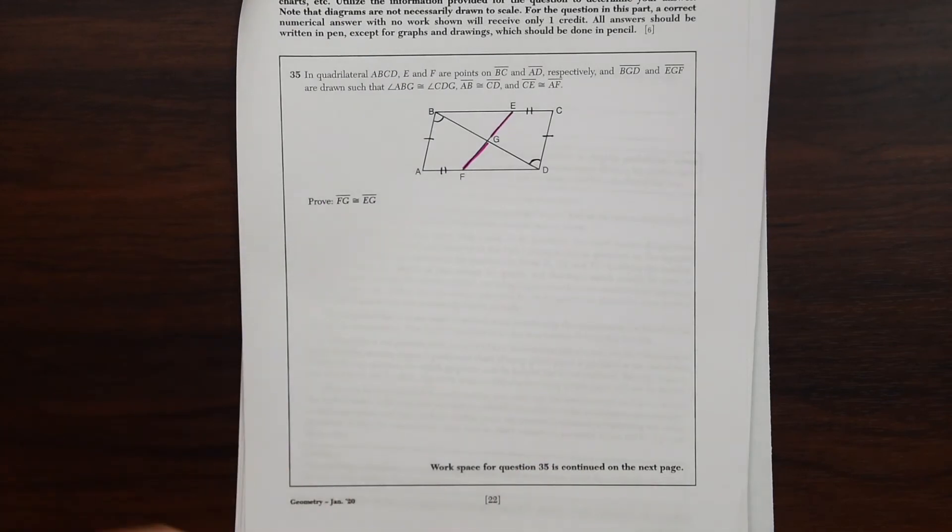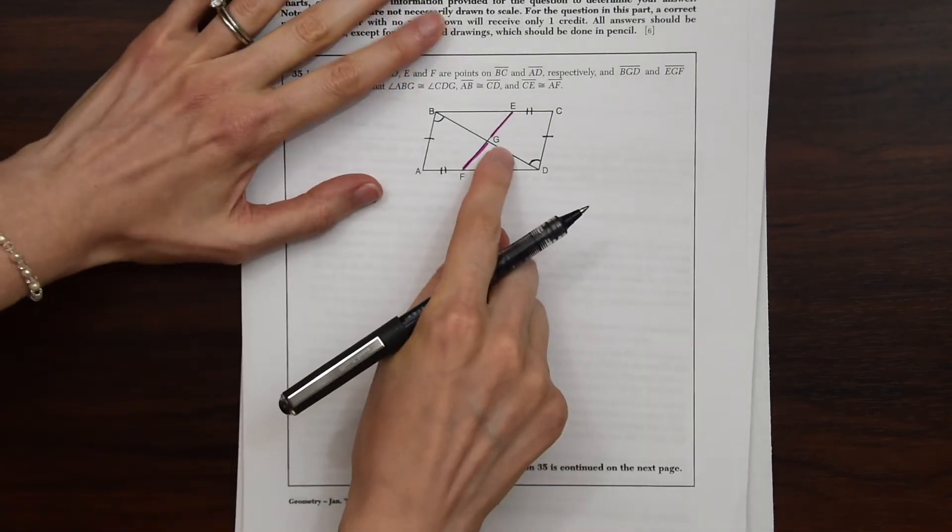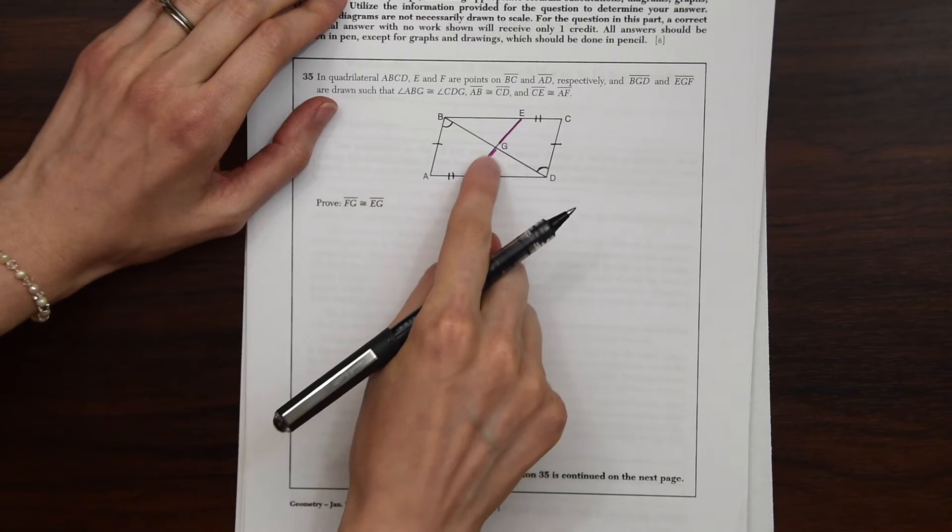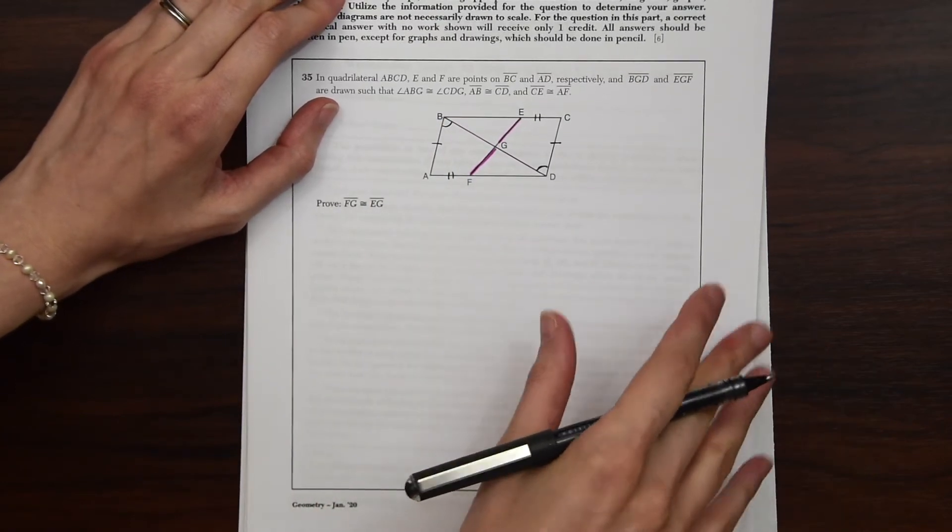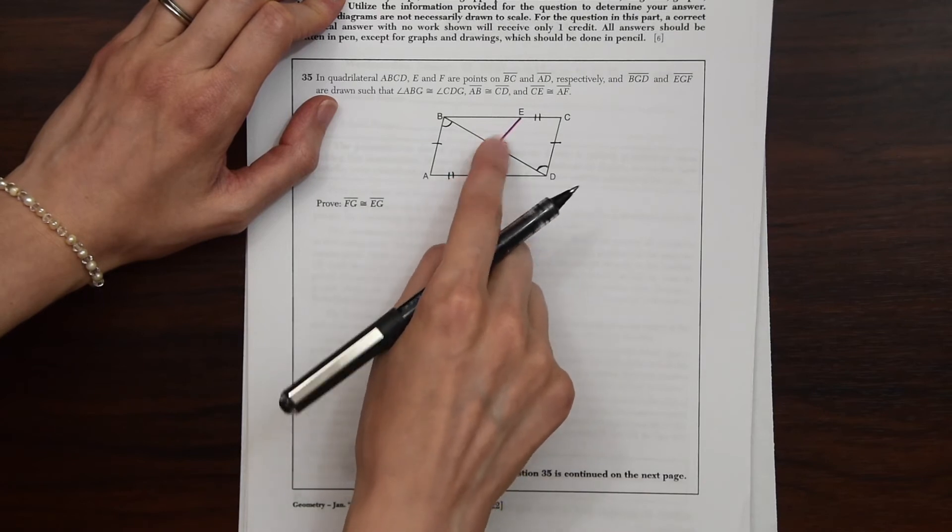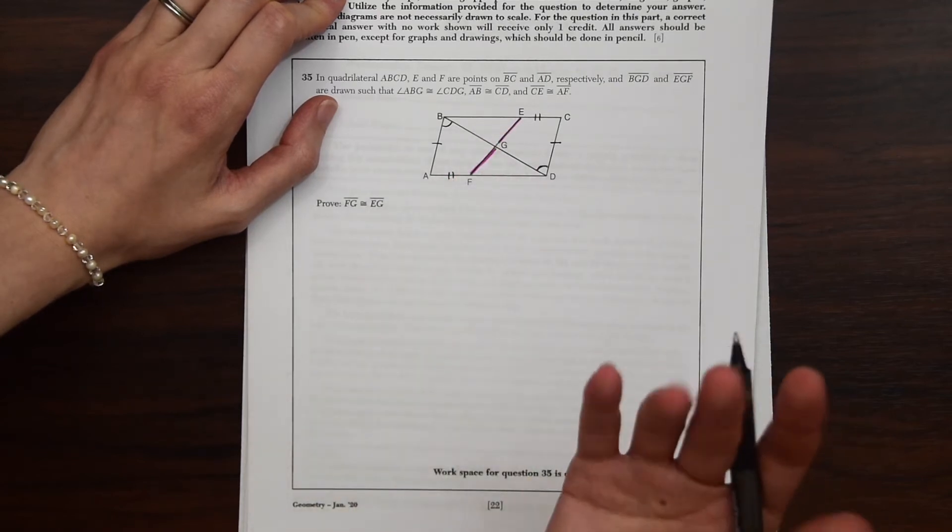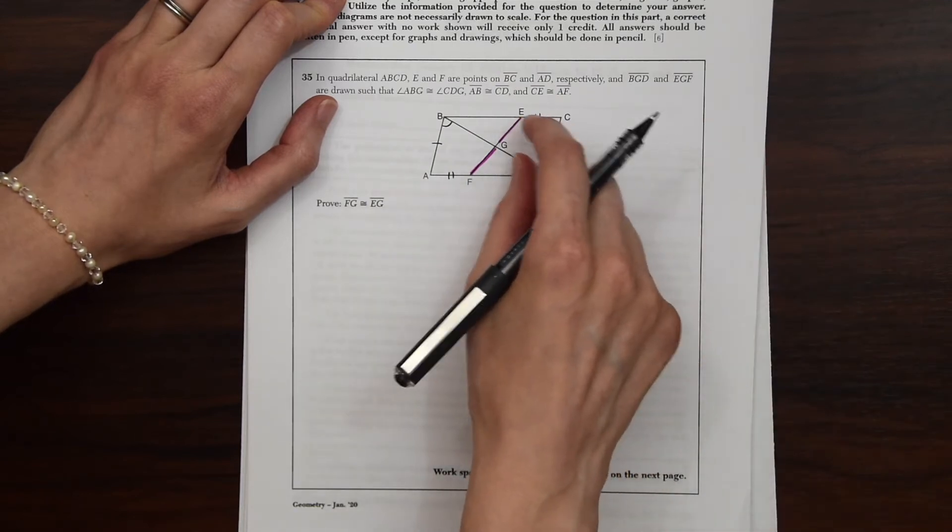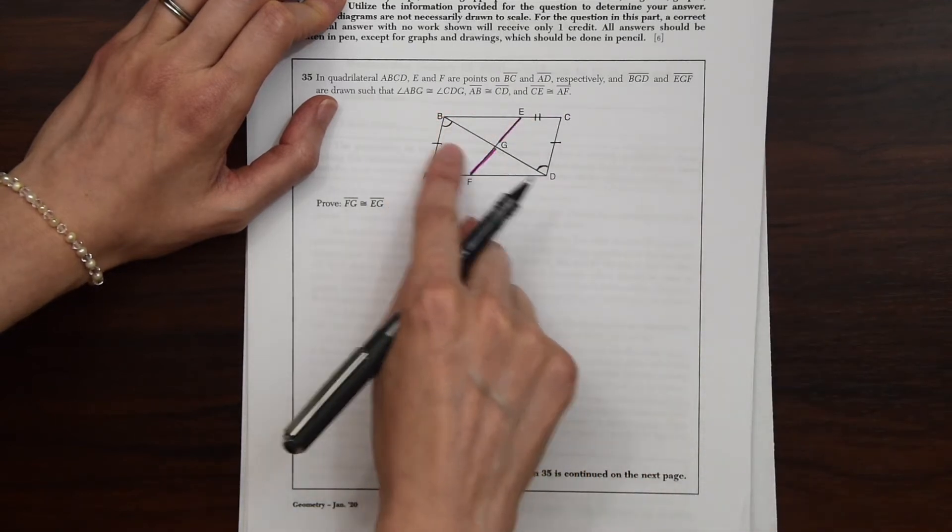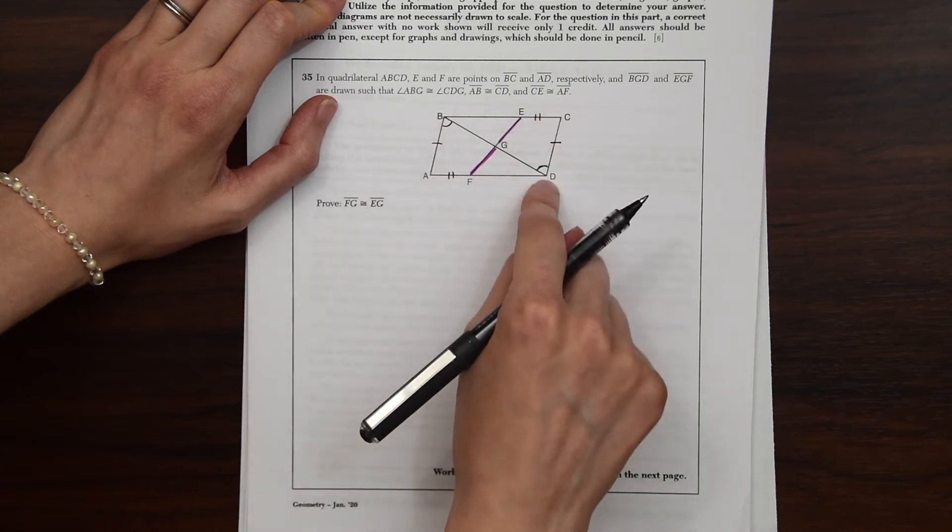So to do that, it looks like we would need to say that triangle FGD and triangle BEG are congruent to each other. And then we could use CPCTC to prove that. But before we do that, it looks like we need to prove this other set of triangles congruent first. Triangle ABD and triangle BCD.